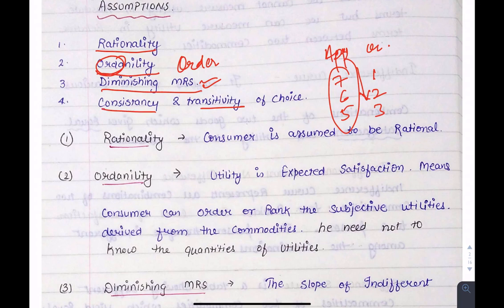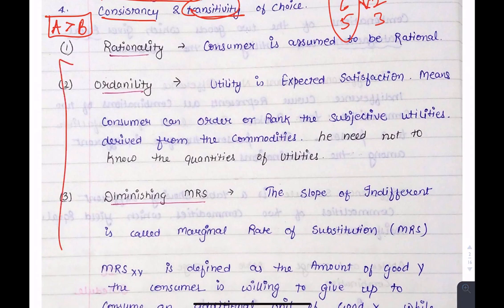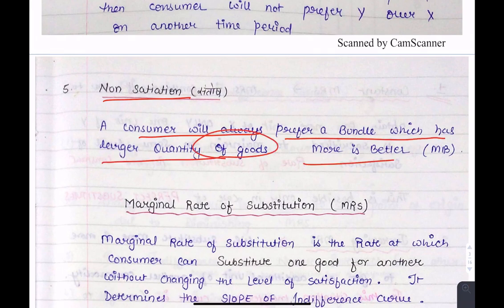Consistency and transitivity: consistency means a consumer prefers product A over product B, and this preference will remain consistent in future choices. Transitivity means if A is preferred to B and B is preferred to C, that means A is more preferable than C. These are all assumptions — you can read them on your own and post any doubts in our Telegram group. Last is non-satiation, meaning a consumer will always prefer a bundle with a larger quantity of goods — more is better.